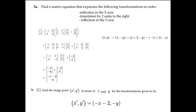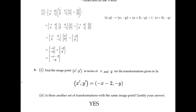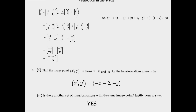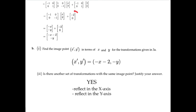The answer to the last question is yes, there is another set of transformations with exactly the same image point — in fact, there are many. One possible answer presents itself in this line: what we see here is a reflection in the x-axis and a reflection in the y-axis, followed by a translation of two units to the left. In the next video, I'll look at other applications of matrix equations. I hope you'll join me then.